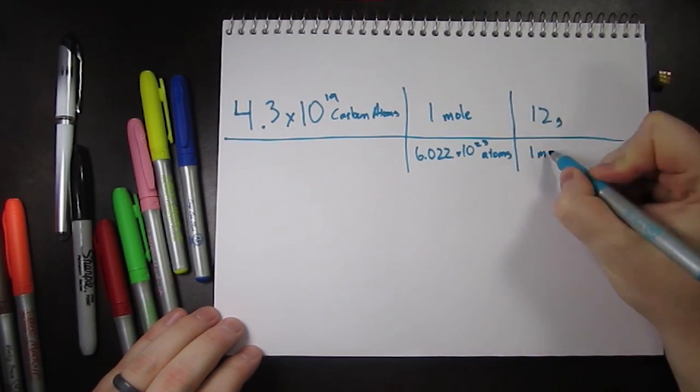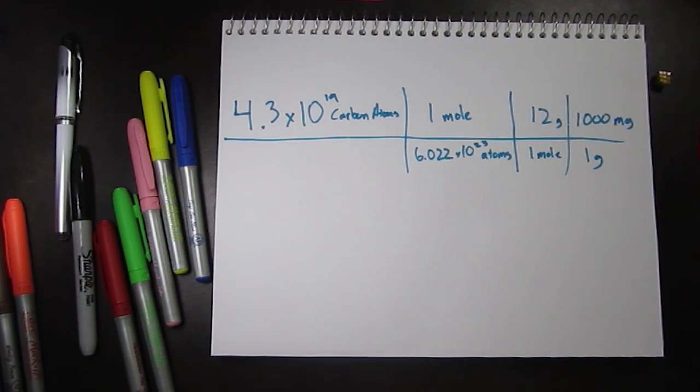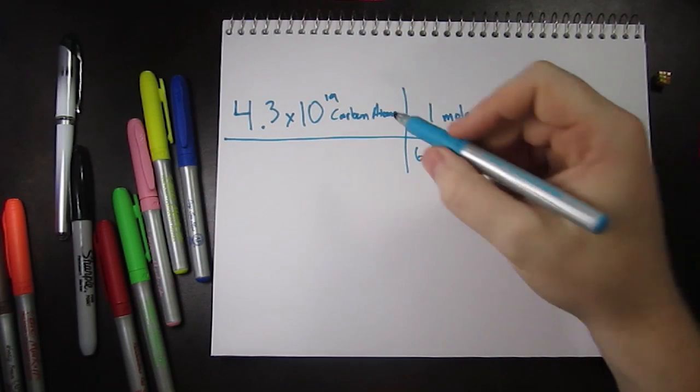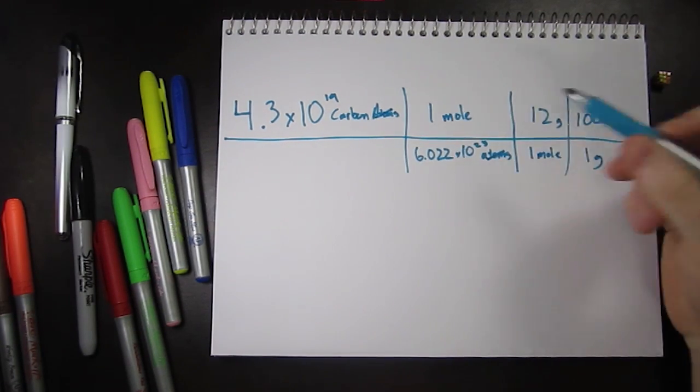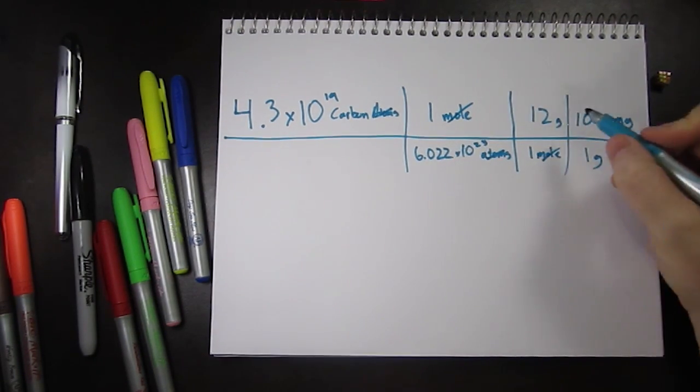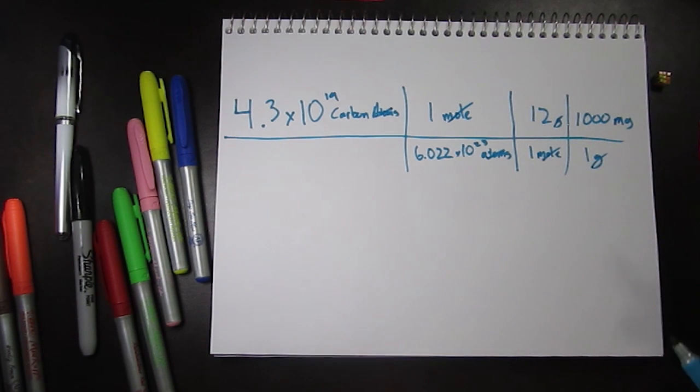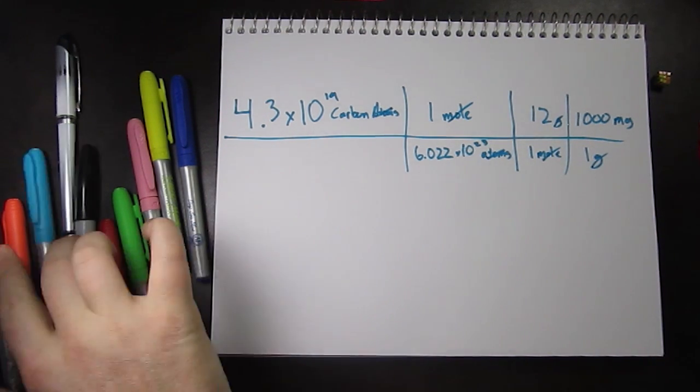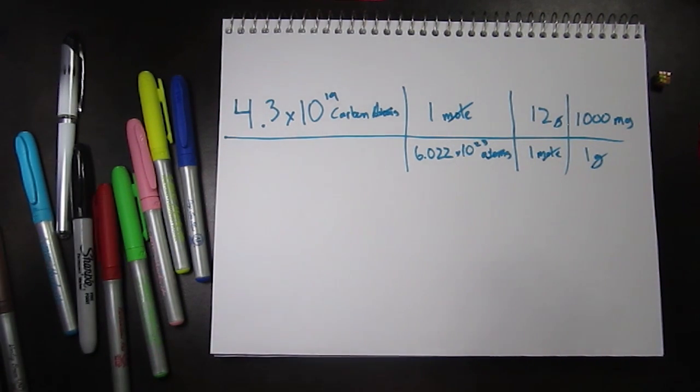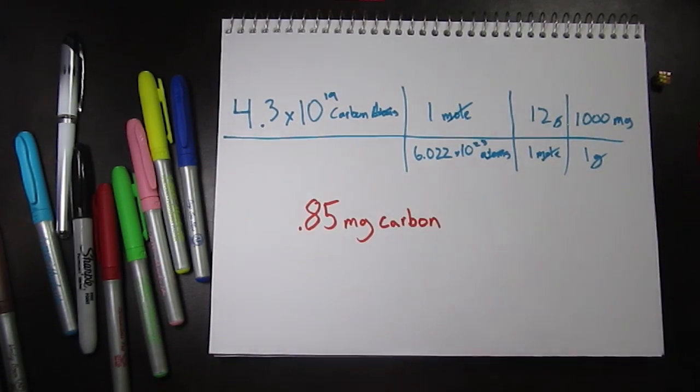Using high school chemistry we can calculate the mass of 43 quintillion carbon atoms. Remember, even though 43 quintillion is a big number, atoms are small. 43 quintillion carbon atoms weighs in at only .85 milligrams.